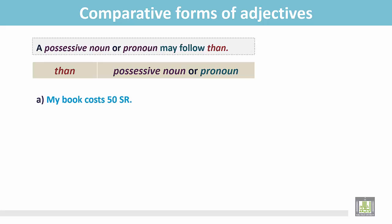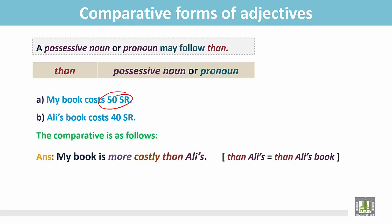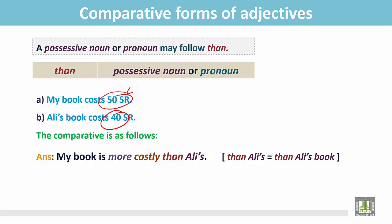Another example. My book costs 50 real. Ali's book costs 40 real, so my book is more expensive. My book is more costly than Ali's. My book is 50 real and Ali's book is 40 real, so my book is more costly than Ali's. We do not write 'than Ali's book' — we write 'Ali's', and it is a possessive noun.